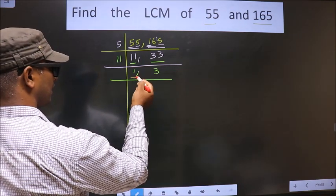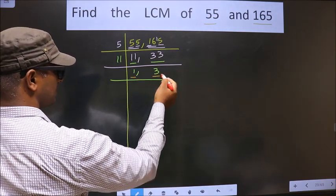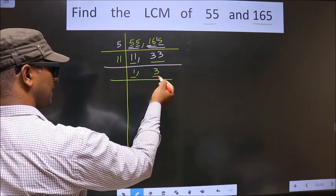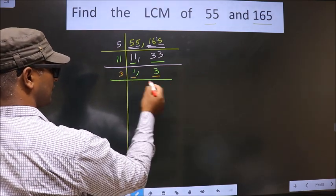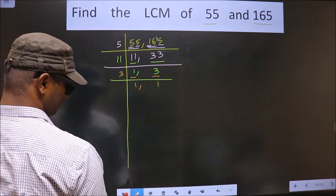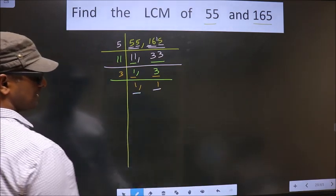Here we got 1, so we focus on the next number, that is 3. 3 is a prime number, so we take 3 once 3. Now we got 1 in both places.